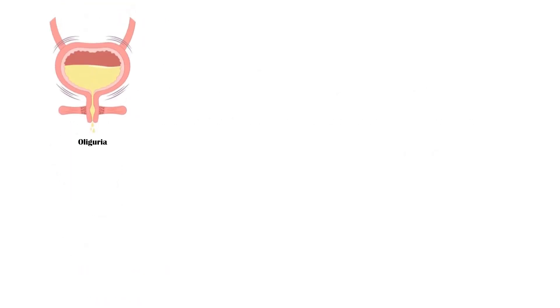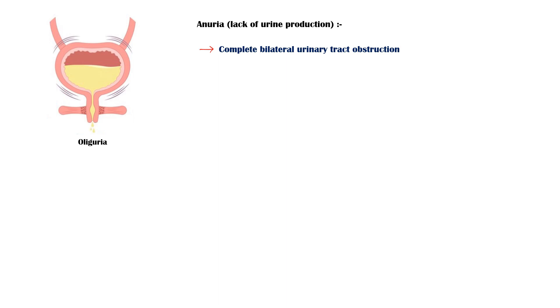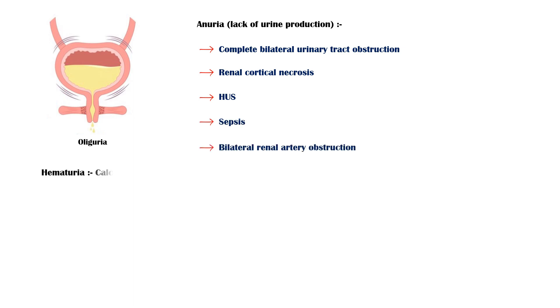Reduced urine output is also a common complaint in patients with hydronephrosis or hydro-ureter. In addition, anuria may occur in cases of complete bilateral urinary tract obstruction, renal cortical necrosis, hemolytic uremic syndrome, sepsis, and bilateral renal artery obstruction. Other symptoms may include hematuria, suggestive of obstructing calculi or malignancy, nausea and vomiting, dysuria, and urinary urgency.